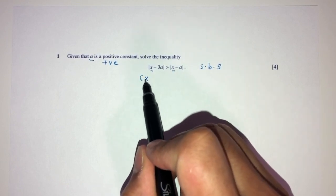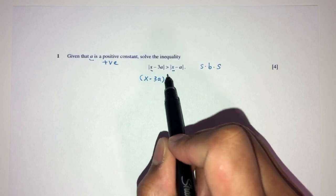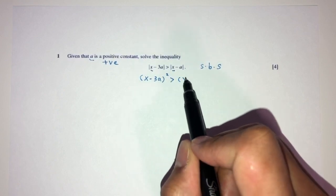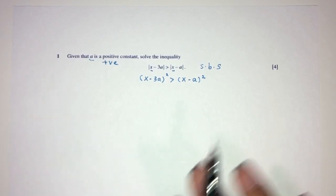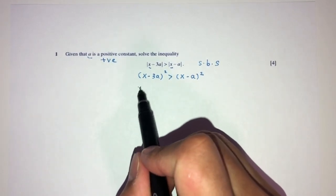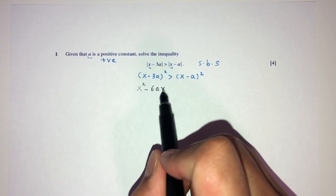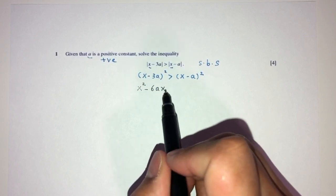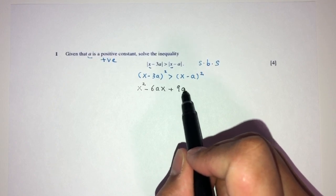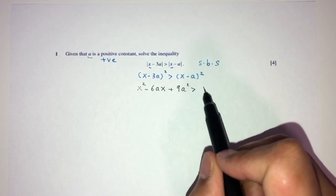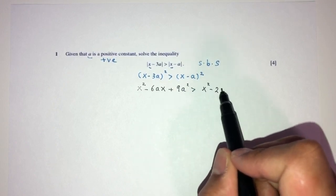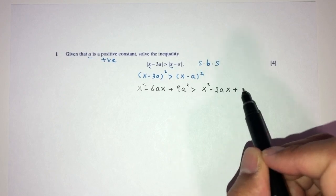So you will have X minus 3A squared more than X minus A squared. Now we have to expand those one by one. So you will have X squared minus 6AX, so 2 times this times this will become this, plus 9A squared more than X squared minus 2AX and plus A squared.